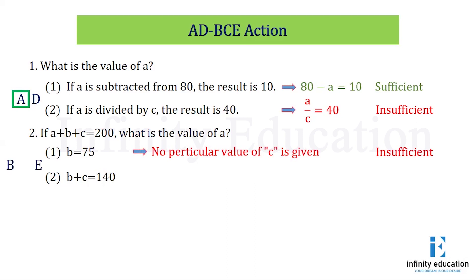If statement 1 is insufficient, we write B, C, E. Now checking statement 2, it is given B plus C equals 140. If B plus C is 140, then putting that value into the equation, we get A equals 60. Hence sufficient. And if it is sufficient, B is the answer to the question.